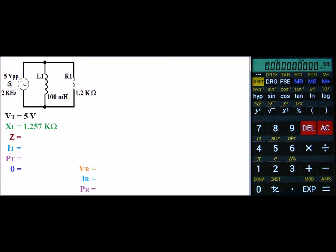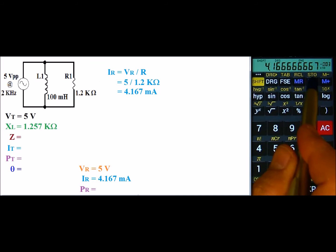Let's go ahead and start with our resistor. Now this is a parallel circuit, and if you remember, voltage remains the same in a parallel. So my VR is 5 volts. Using Ohm's law, we can find IR, which states that VR divided by R. So we have 5 volts divided by 1.2 kiloohms. So we have 5 divided by 1.2 exponent 3. And that gives us a current of 4.167 milliamps. I'll go ahead and store this value.